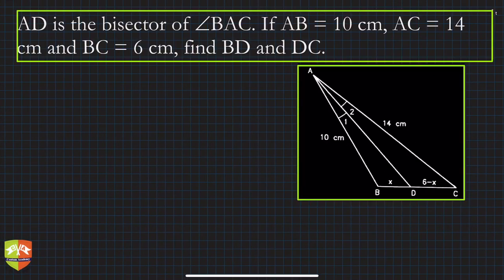Here is another question. It says AD is the bisector of angle BAC, and AB is given 10 centimeter, AC is 14. Let me highlight it: AC is 14, AB is 10, BC is given as 6, so this entire thing is 6. We have to find BD that is x and DC which is 6 minus x.